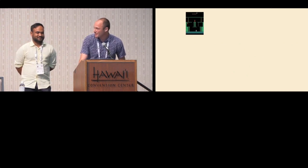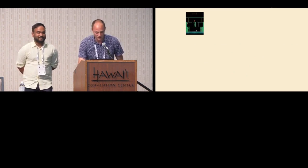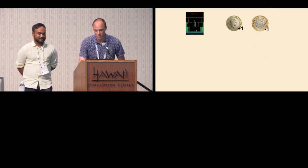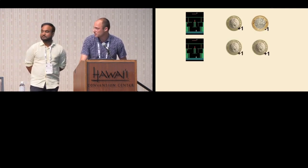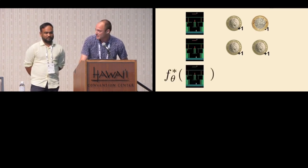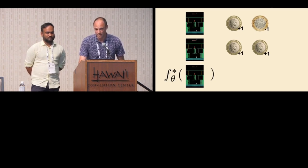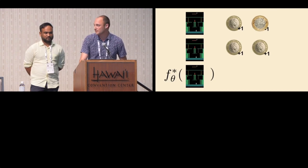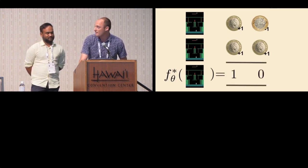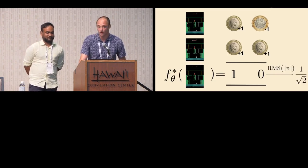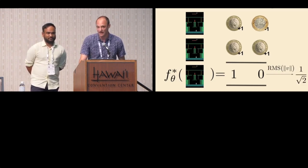Say we're playing Montezuma's Revenge and we encounter an observation. We assign it one of these random coin flip vectors of ones and minus ones. We keep playing, see the same state again, and assign it a new vector. We then train a function approximator to map observations to their coin flip vector labels. It can't do this perfectly because the same observation has been assigned two different labels. Under mean squared error, the best it can do is output the average of these two coin flip vectors, whose magnitude — by the central limit theorem — scales exactly with 1 over the square root of n. So we use this magnitude as the bonus.